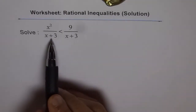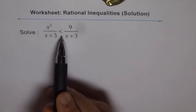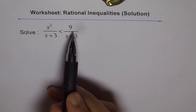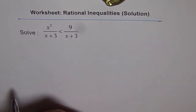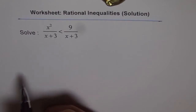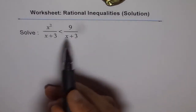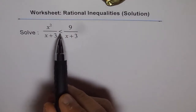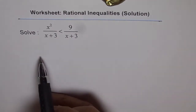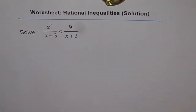We have x squared divided by x plus 3 is less than 9 over x plus 3. Now, a common mistake I have seen with most students is they will cancel out this common factor and try to solve the equation x squared less than 9. That is not permitted in rational inequalities.